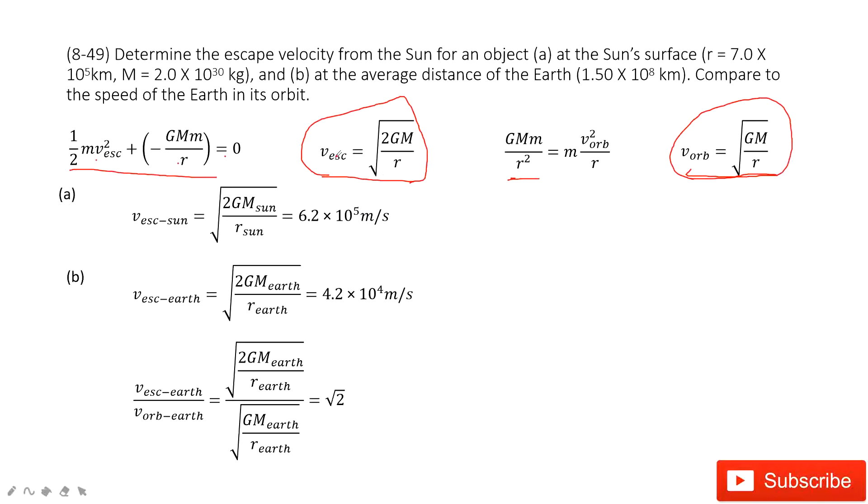What can we find? This one is just the square root of 2 times the orbital velocity.